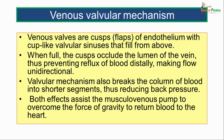Venous valvular mechanism: venous valves are cusps or flaps of endothelium with cup-like valvular sinuses that fill from above. When full, the cusps occlude the lumen of the vein, preventing reflux of blood distally and making flow unidirectional. The valvular mechanism also breaks the column of blood into shorter segments, reducing back pressure. Both these effects assist the musculovenous pump in overcoming the force of gravity to return blood to the heart.